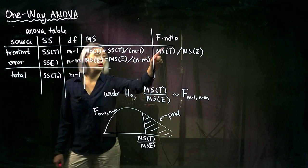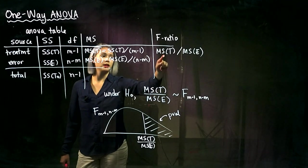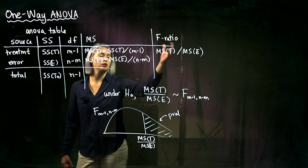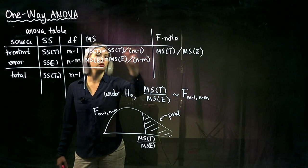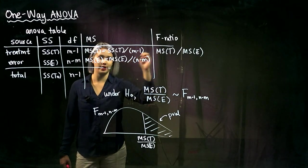And then finally, when we get to our test statistic, remember that's just MST divided by MSE. That's pretty easy. We just look at this column, take this value, divide by that value, and that's our test statistic.